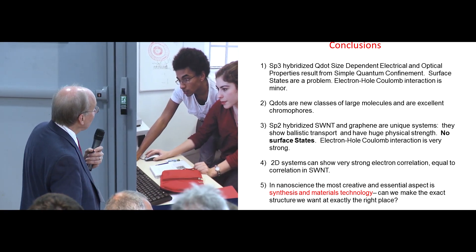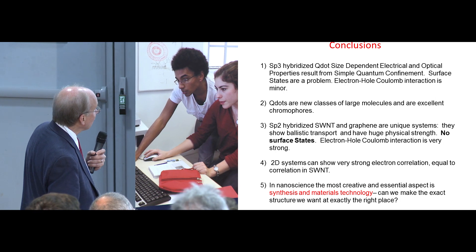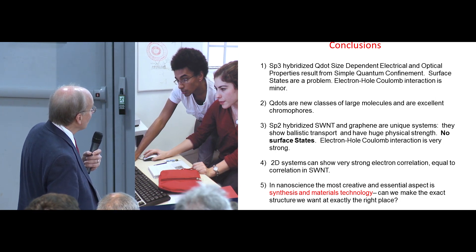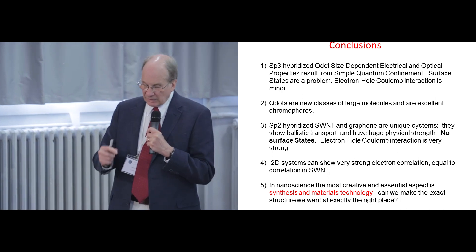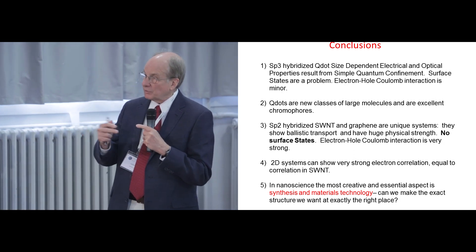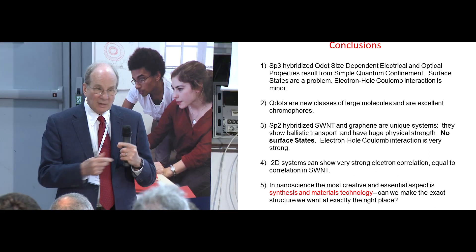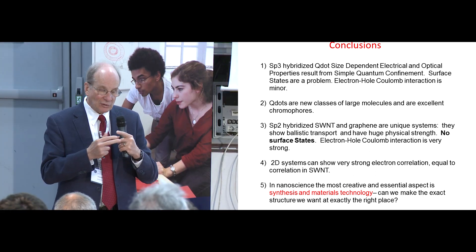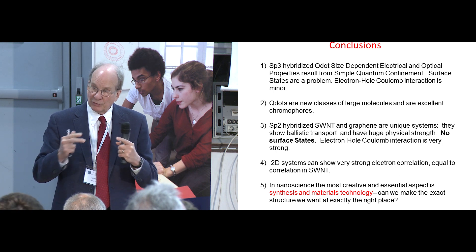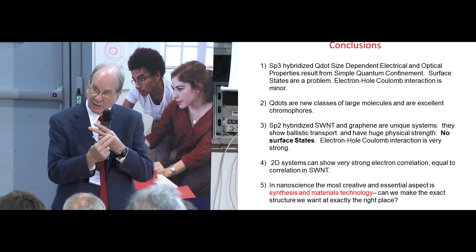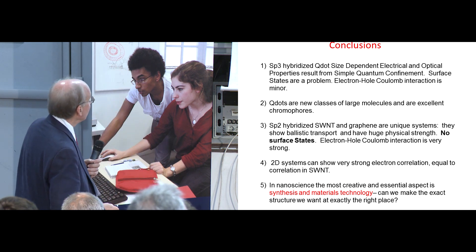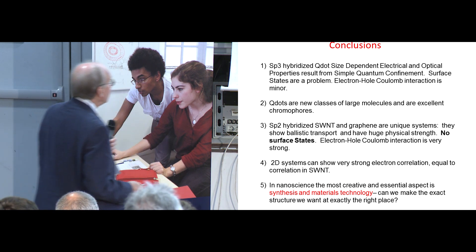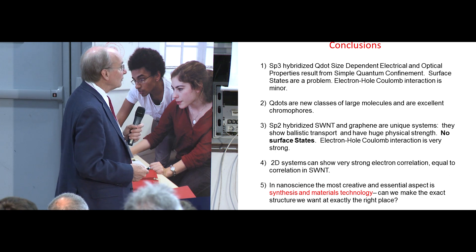2D systems such as the MoS2 system can show a very strong electron correlation equal to the correlation in carbon nanotubes. And that's because, in fact, they involve d orbitals, their d bands, d bands in the bulk material. And so the kinetic energy of the localization, the dispersion is relatively low. And therefore, it's that much easier to make excitons out of that when the dispersion is low for d band materials.